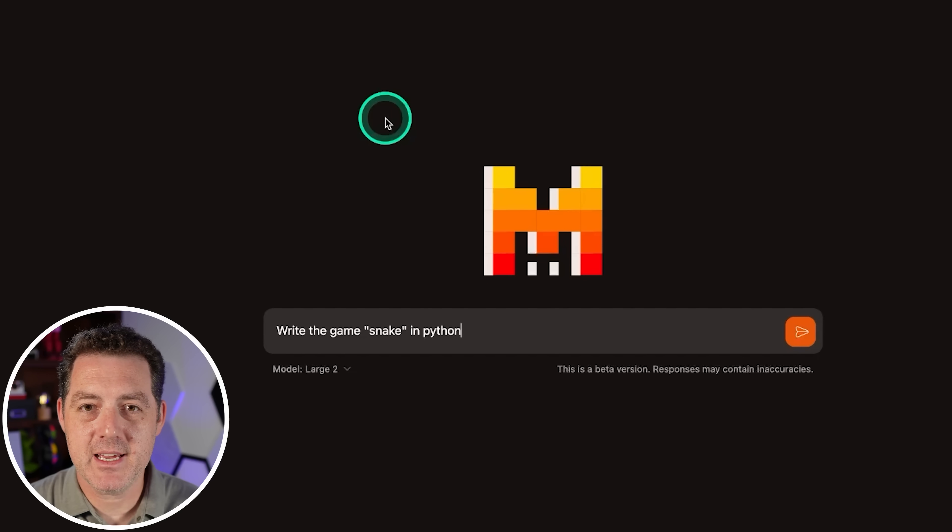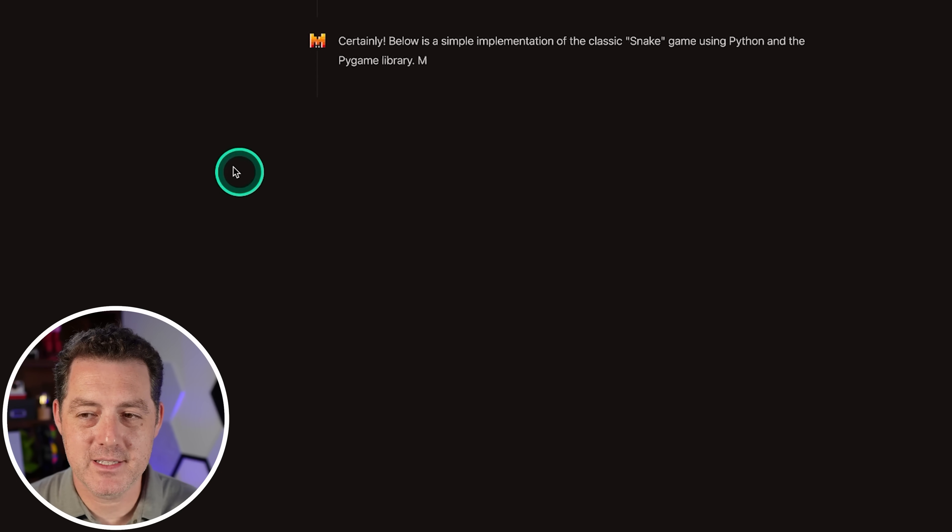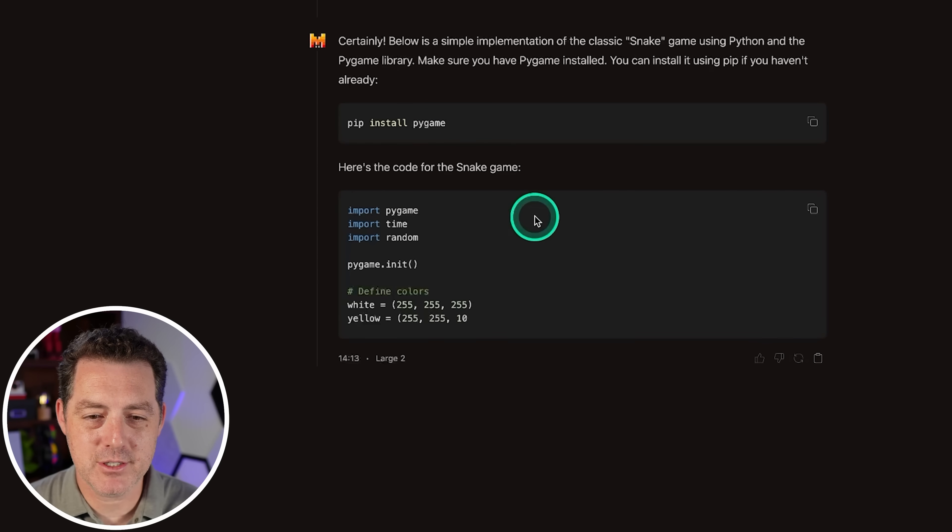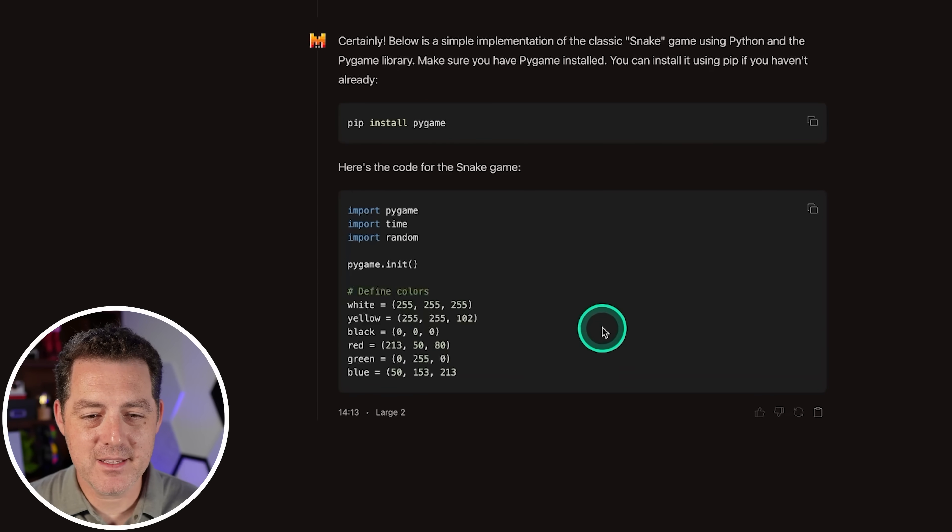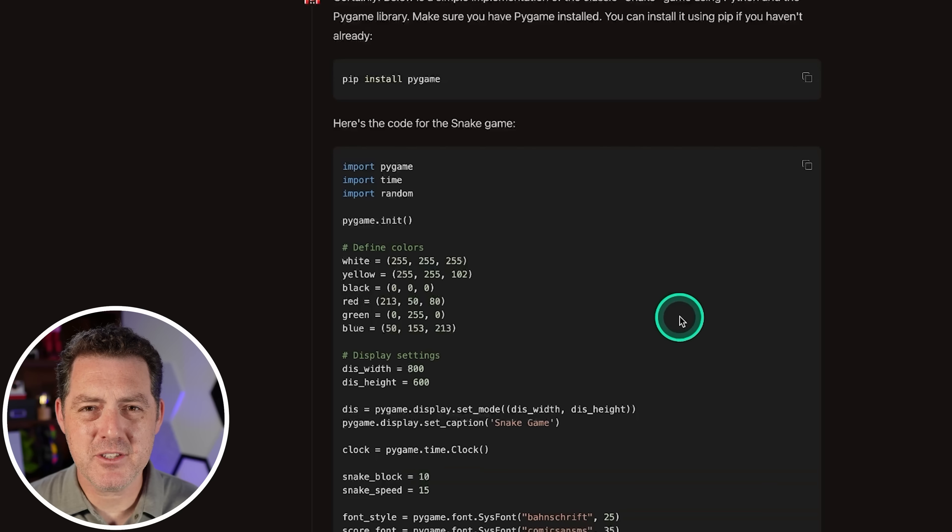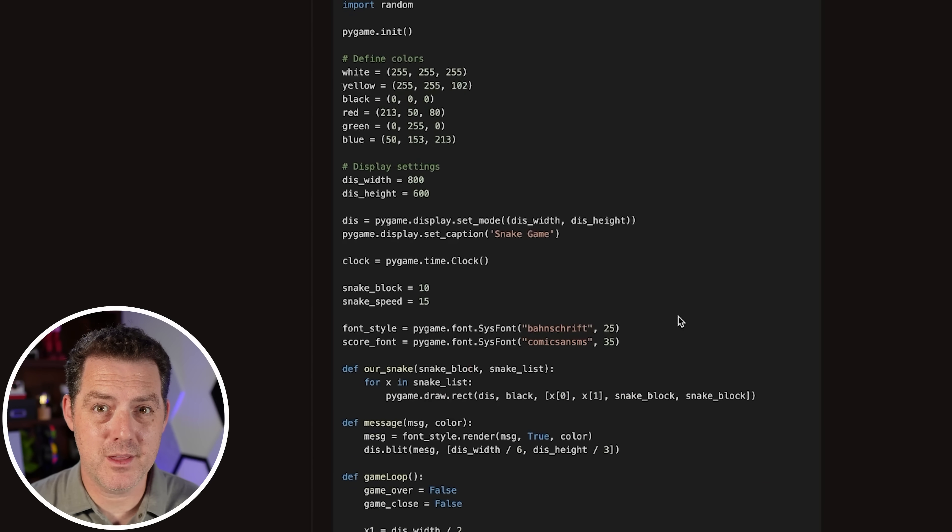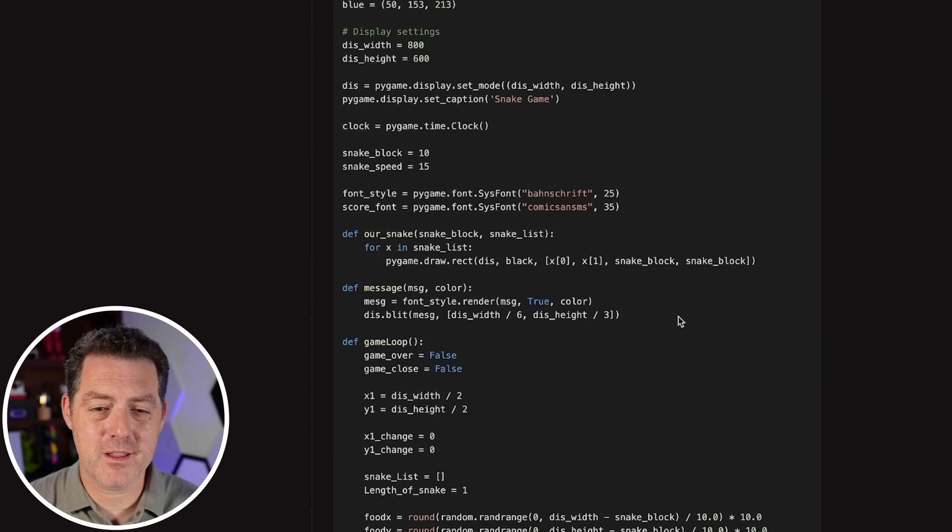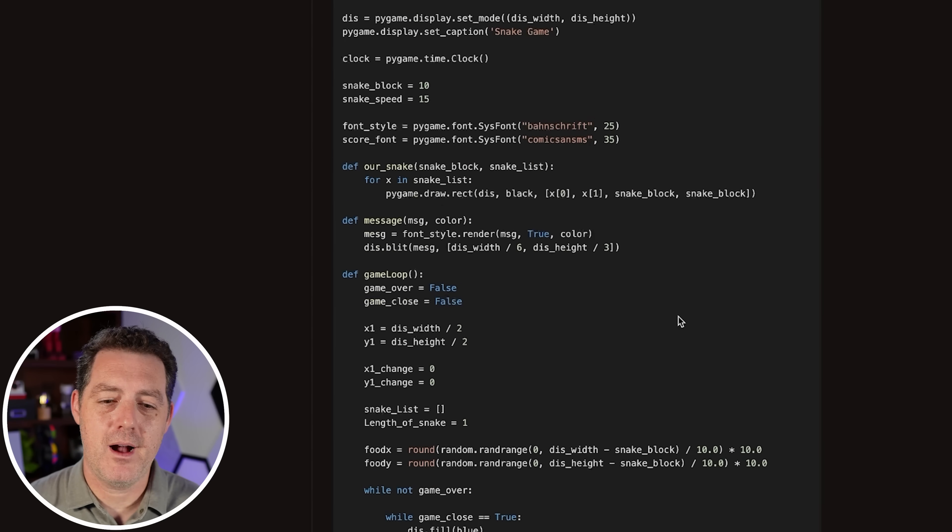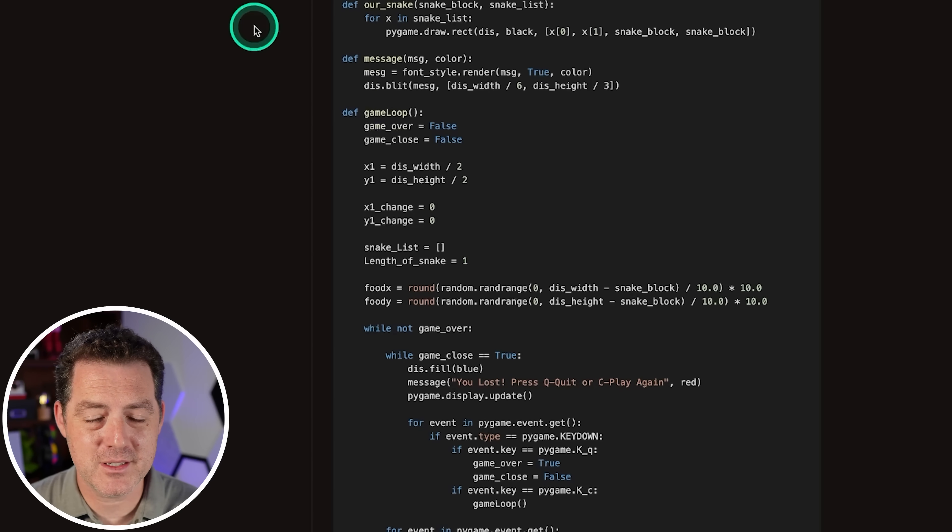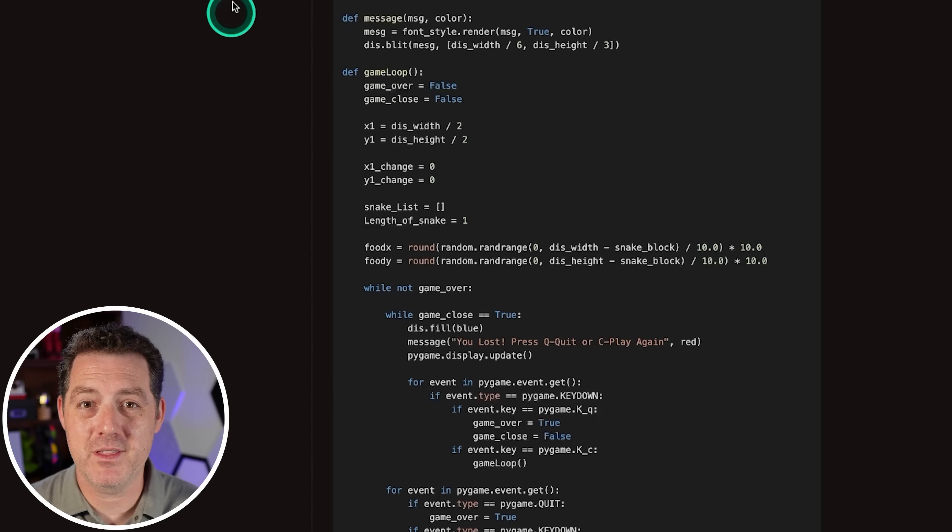Next, write the game Snake in Python. Let's see how it does. Is it going to get it on the first pass? So it's going to be using Pygame, which is good to see. And yeah, this is pretty slow, actually, especially given that it's not nearly as big as GPT-4O and certainly smaller than 405B. I would figure it would be a lot faster, but it is not. So I'm sure there are ways to speed it up and LeChat is completely free. Thank you for putting this live.